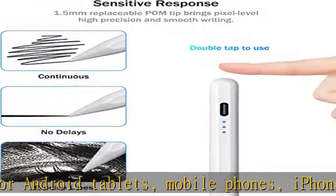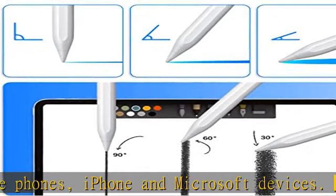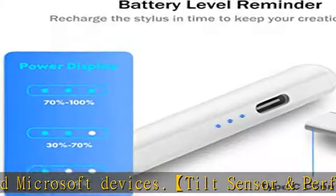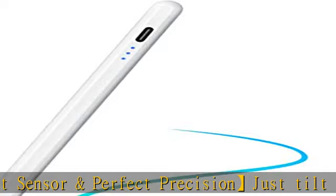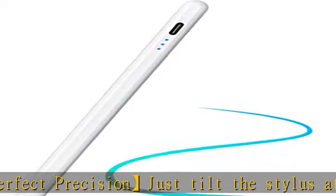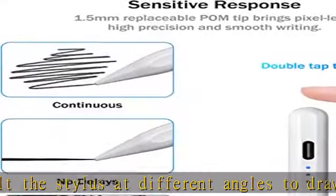Note: the stylus pen for iPad has no pressure sensitivity. LED indicator and fast charging: three levels of LED indicators remind you to charge the stylus device in time. With the USB-C charging port, it can work continuously for 8 hours, with 90-day standby time and automatic sleep mode after 5 minutes.